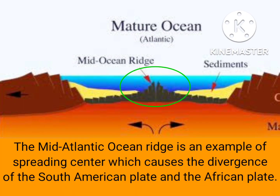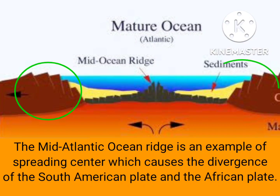The Mid-Atlantic Ocean Ridge is an example of a spreading center which causes the divergence of the South American plate and the African plate.